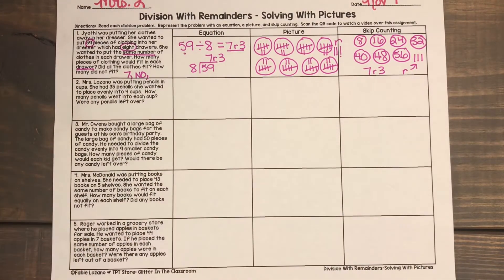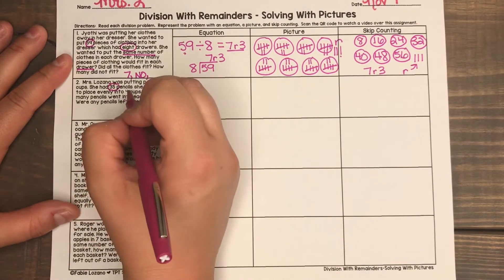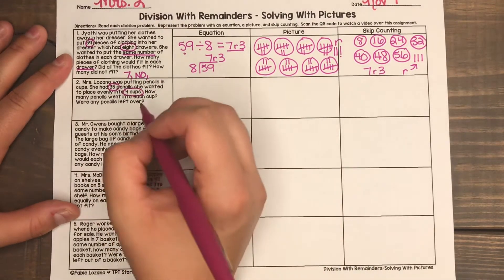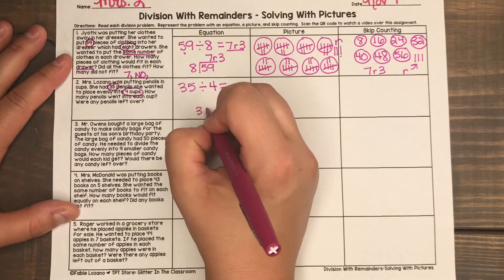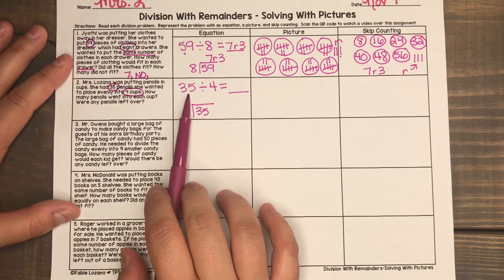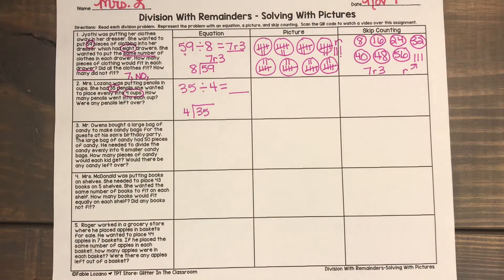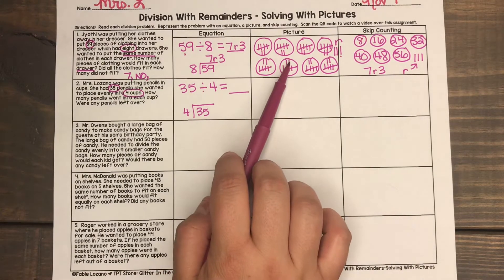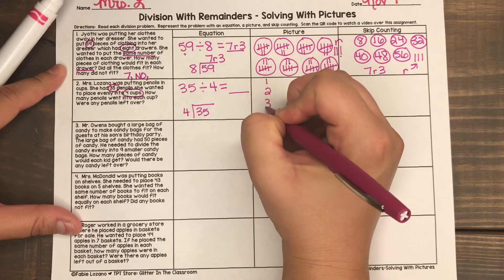Let's do number two together. Mrs. Lozano was putting pencils in cups. She had 35 pencils she wanted to place evenly into four cups. How many pencils went into each cup? Were any pencils left over? I know I have 35 pencils and I'm going to place them evenly into four cups. Let me set up my equation: 35 pencils divided into four cups. I know my divisor is four — when I skip count by four, I never say the number 35, so that tells me this is definitely going to have a remainder.